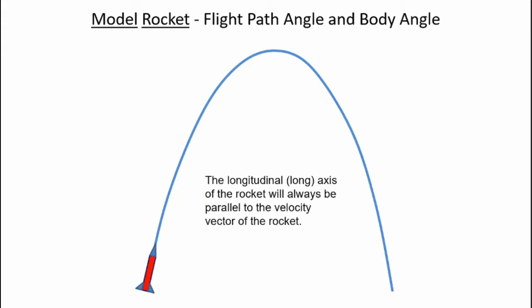Let's take a look at the difference between flight path angle and body angle. First we'll look at a model rocket flight. Here's my rocket flying along its trajectory. What you'll see is in the model rocket, the body elevation is going to be equal to the flight path angle. That's because the rocket is flying inside the atmosphere. There are always aerodynamic forces acting on the fins that keep the rocket aligned with the velocity vector.